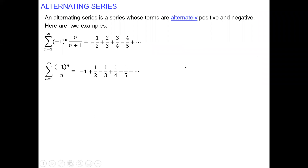Alternating series test. An alternating series is a series whose terms are alternately positive and negative. Here we have two examples. Usually the alternating series will include the part of the formula negative one to the n, or negative one to the n plus one, or negative one to the n minus one.